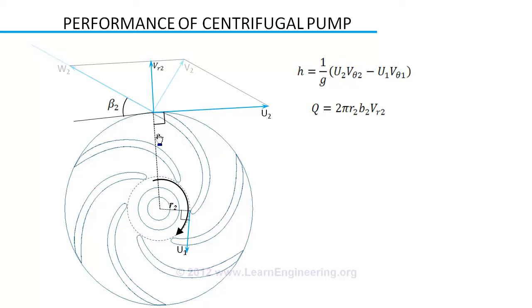Absolute velocity of flow can be drawn like this. From this we can find out tangential component of flow velocity. At inlet of centrifugal pump flow velocity will be radial, so tangential component of velocity is zero. So energy head developed by the pump simplifies like this.